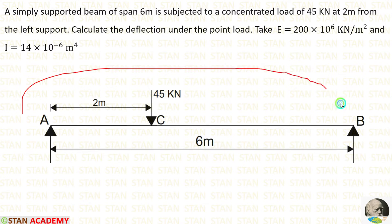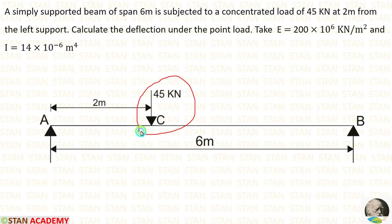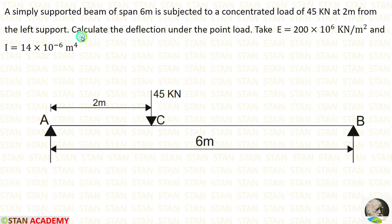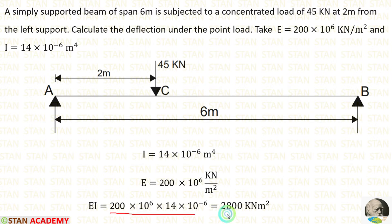Using the data, we can draw the diagram. The length of the beam is 6 m, carrying a 45 kN point load at 2 m from the left support. We have to calculate the deflection under the point load. The Young's modulus and moment of inertia are given, so let us multiply both for convenience. EI = 2800 kNm².